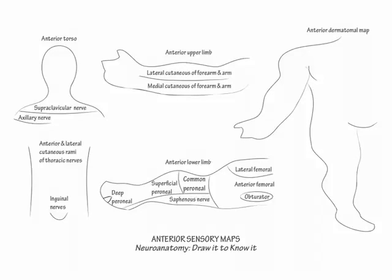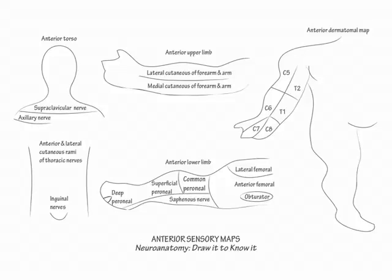Now let's draw the dermatomal map. First show C7 covers the middle finger, C8 the medial hand, and C6 the lateral hand and lateral forearm. Split the arm into medial and lateral compartments, and show C5 covers the upper lateral arm, then T1 covers the medial forearm, and T2 the medial upper arm. Next show T4 covers the band across the nipple line, T10 the umbilicus, and L1 the inguinal region.